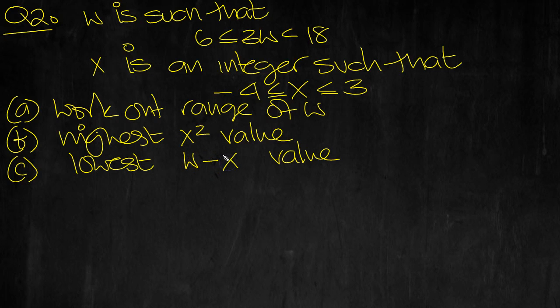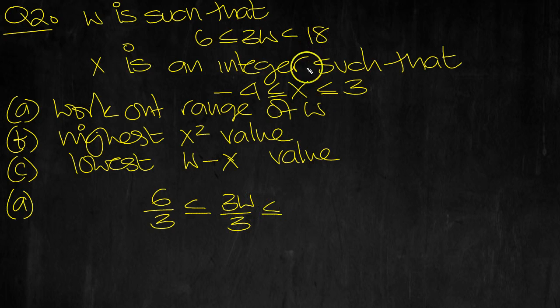I'll check that in a minute when we flick back to the question for part c. So part a, that's the range of w. Divide by 3 then, all the way through. 6 over 3 is less than or equal to 3w over 3 is less than or equal to 18 over 3.